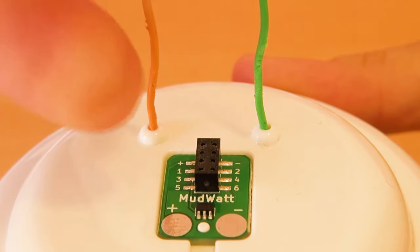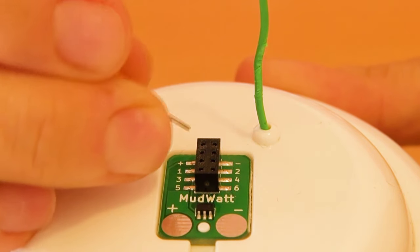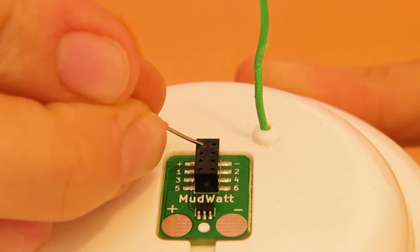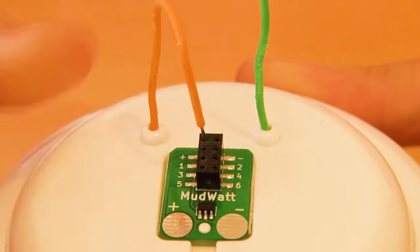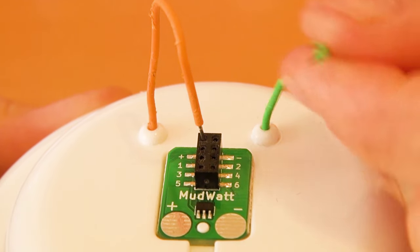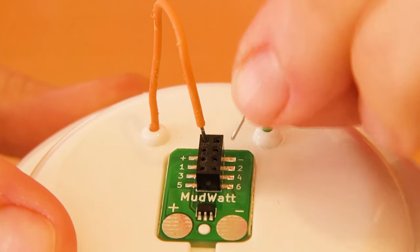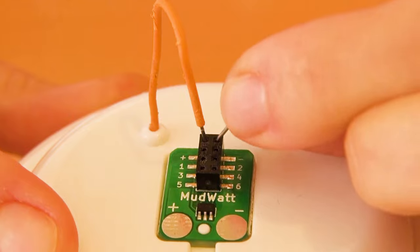Once you close the lid, take the orange wire that comes from the cathode, bend it and insert it into the pin on the hacker board next to the plus sign. Then take the green wire that comes from the anode, bend it and insert it into the pin next to the minus sign.